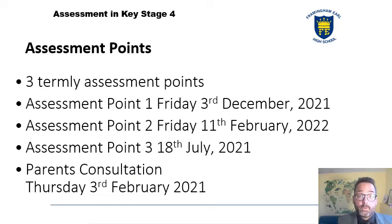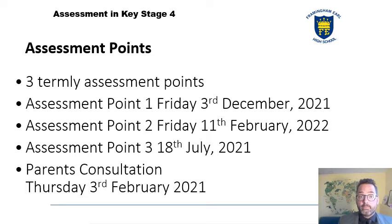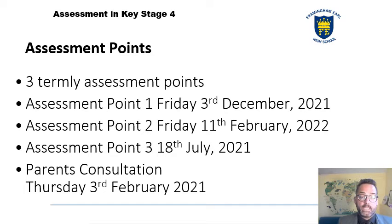We've adjusted our assessment points two years ago, so here are the dates — they will be coming home and are still going to be on My Child at School. The first assessment point will be at the end of November, giving the first real opportunity to get a picture from teachers of how your son or daughter is progressing, based on teacher assessment in class. Then we'll have the parents' consultation on the 3rd of February. Assessment point two on the 11th of February is where we will release target grades, and assessment point three is based on the end of Year 10 mock exams.